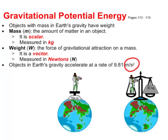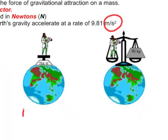Objects in Earth's gravity accelerate at a rate of 9.81 meters per second squared. You might have noticed that is an acceleration. It's almost 10 meters per second squared.